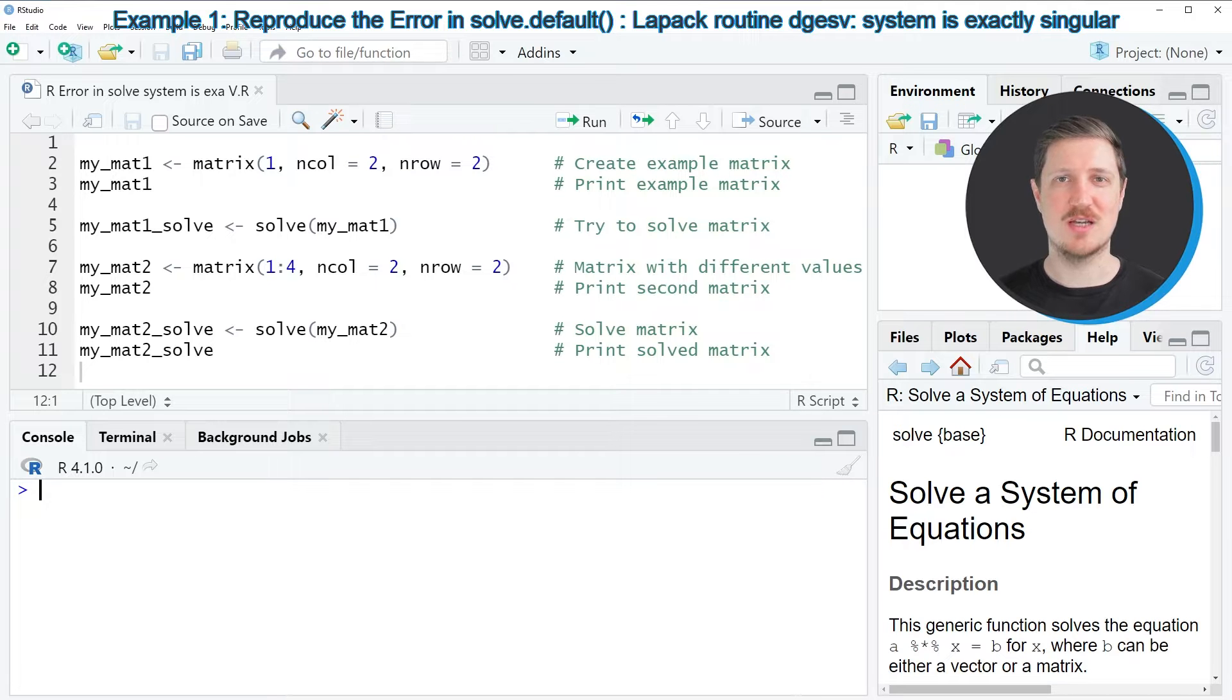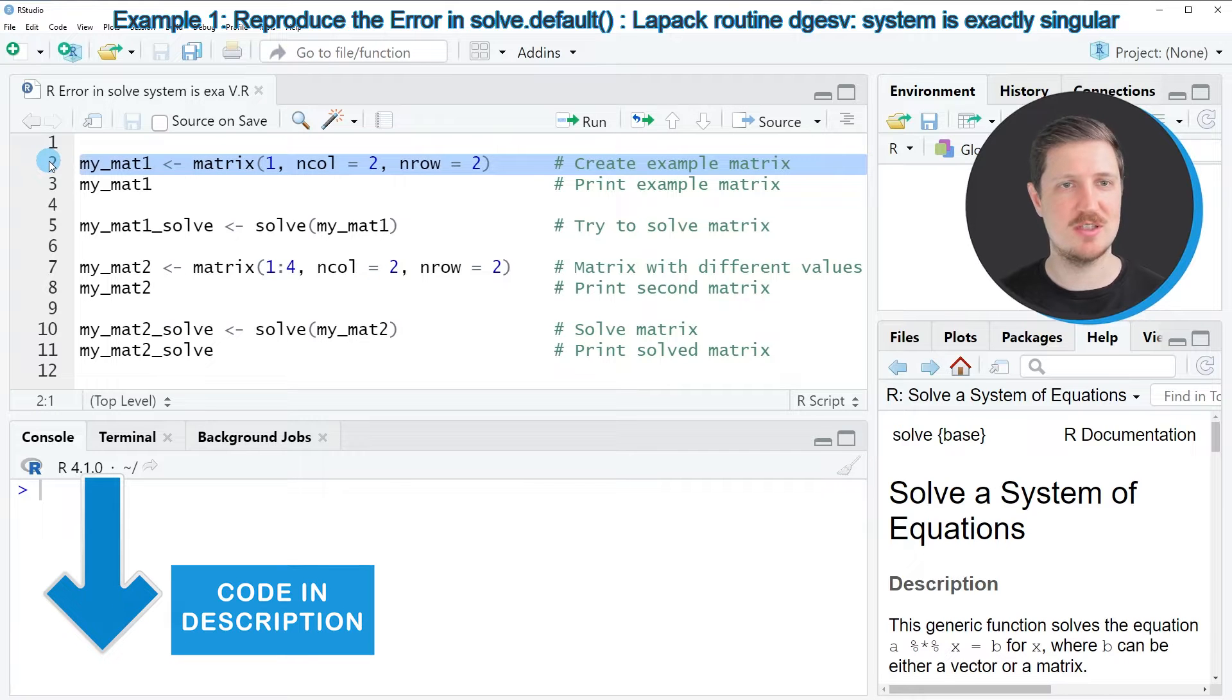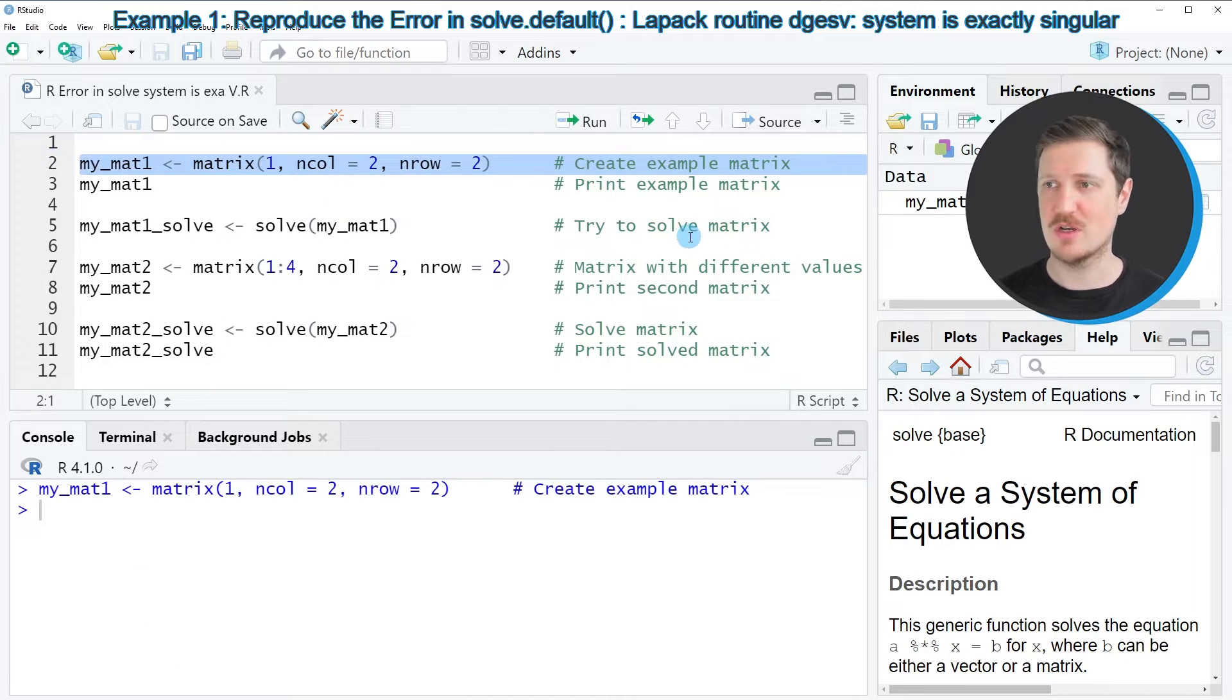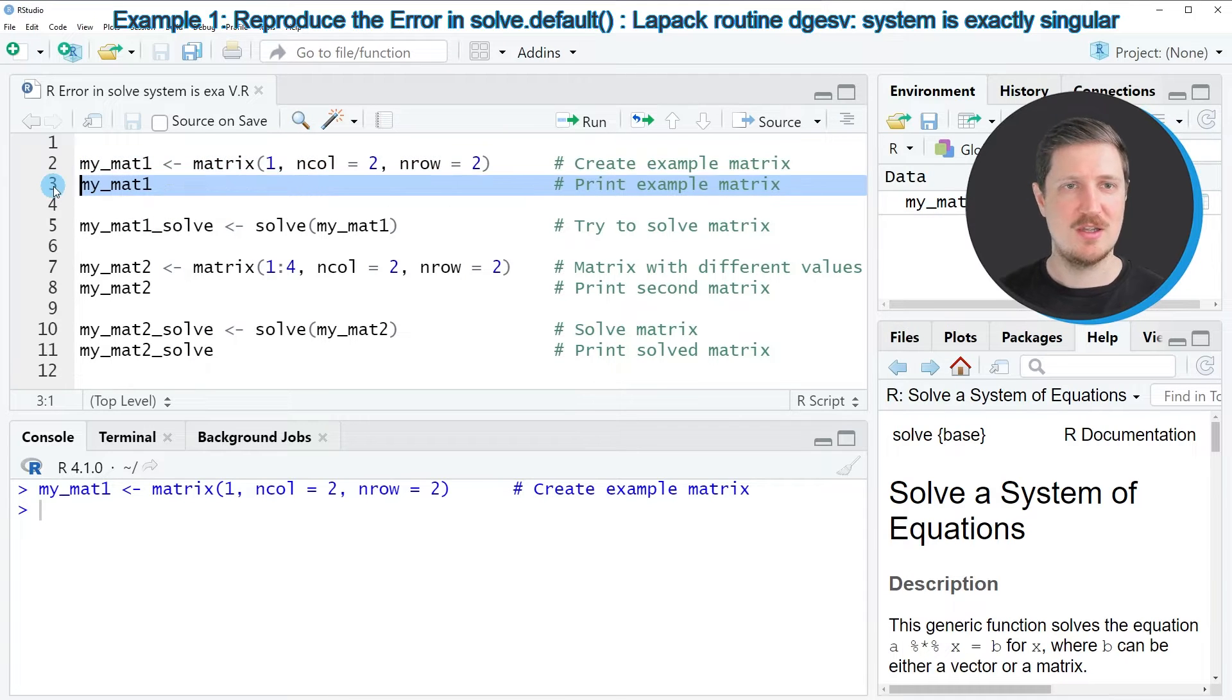In this video I will show you an example, and for this example we first need to create an example matrix as you can see in line 2 of the code. After running this line of code, a new matrix object called MYMAT1 is appearing at the top right, and in line 3 of the code we can print our matrix to the RStudio console.